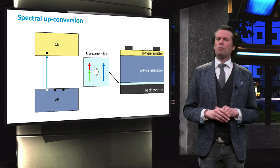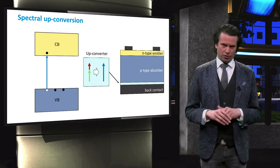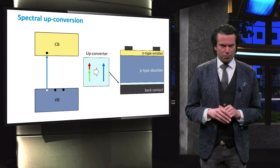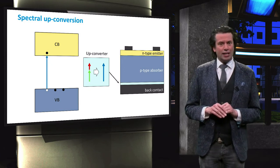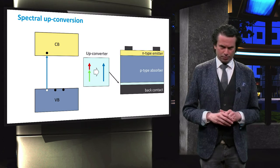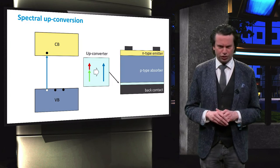So-called triplet-triplet annihilation up-converters use organic dyes with rationally ordered energy levels. These up-converters operate at shorter wavelengths between about 500 to 800 nm. On the other hand, rare earth converters, which make use of atomic transitions within lanthanide ions, work in the region around 1500 nm. Both approaches have already demonstrated an enhancement of the solar cell efficiency.